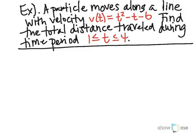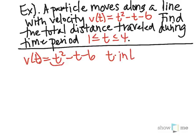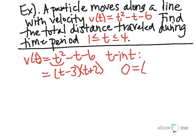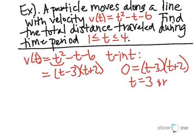Let's start by graphing the velocity function. We can see it's going to be a parabola because this is a quadratic, and it's going to open up because the coefficient in front of t squared is positive 1. Let's find the t-intercepts by factoring into (t − 3)(t + 2), so the t-intercepts occur where velocity is 0, giving t = 3 or t = −2.